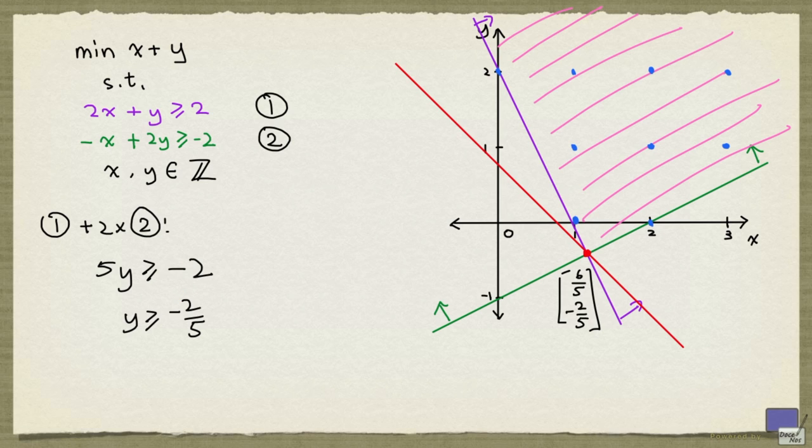But we know that y is required to be an integer. And here, this is a number bigger than negative 1 but less than 0. So, what we can conclude from here is that y must be at least 0 since y is an integer.